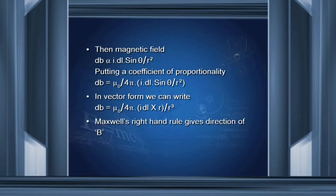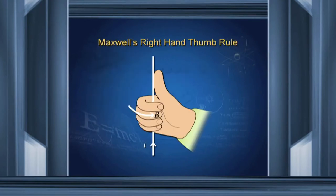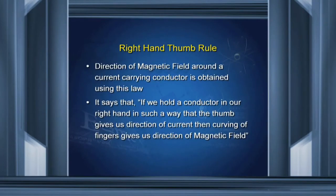The direction of the magnetic field is obtained using Maxwell's right-hand thumb rule. It says that if we hold a conductor in our right hand such that the thumb gives us the direction of the current flowing through the conductor, then the curving of the fingers around the conductor gives us the direction of the magnetic field.